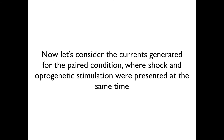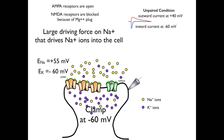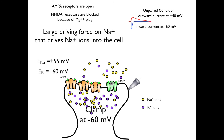Now let's consider the currents generated for the paired condition, where the shock and optogenetic stimulation were presented at the same time. In the paired condition, long-term potentiation was generated at the synapse, which added additional AMPA receptors. The membrane is clamped at minus 60 millivolts, so only the AMPA receptors are conducting; the pores of the NMDA receptors are plugged by magnesium ions. Glutamate is bound to the receptors so their gates are open, and the large driving force on sodium drives sodium ions into the cell, which is then terminated when the glutamate diffuses off of the receptors.